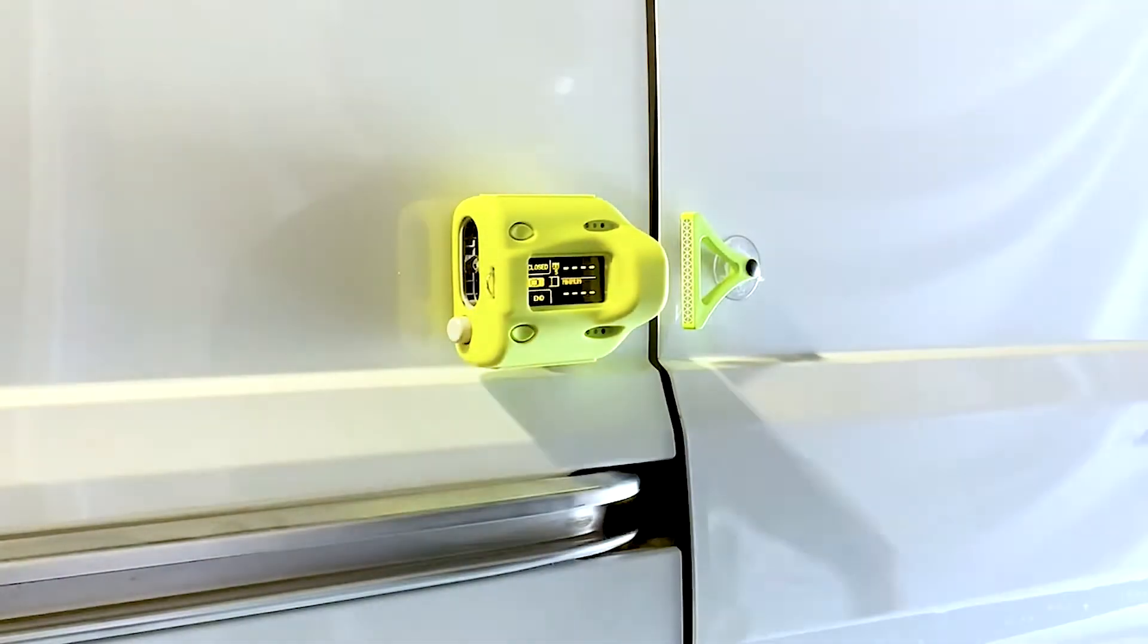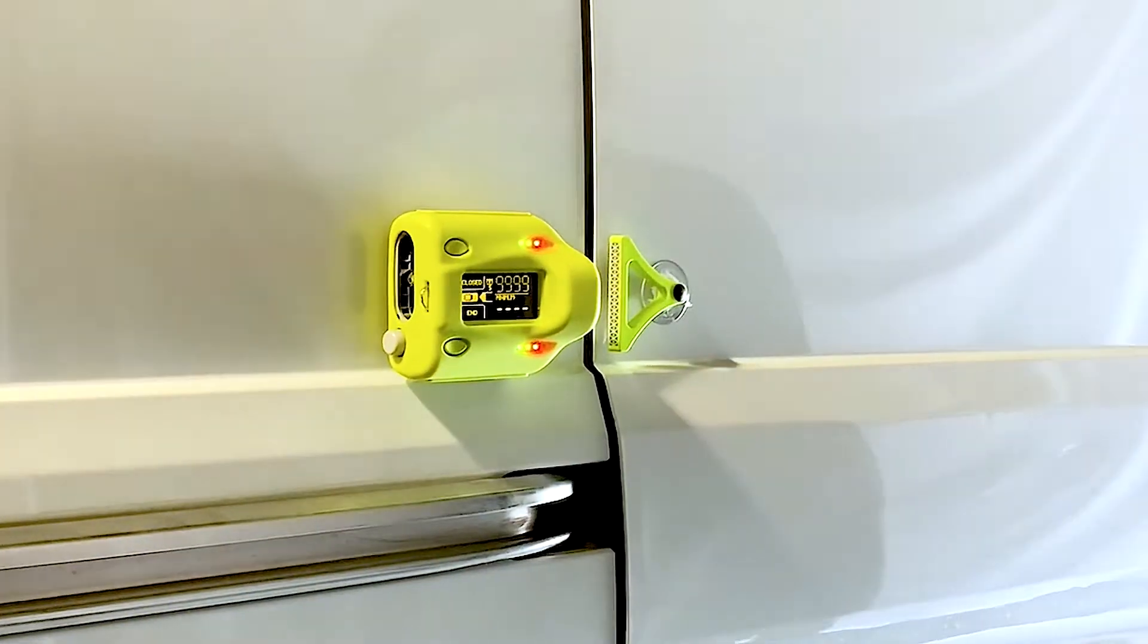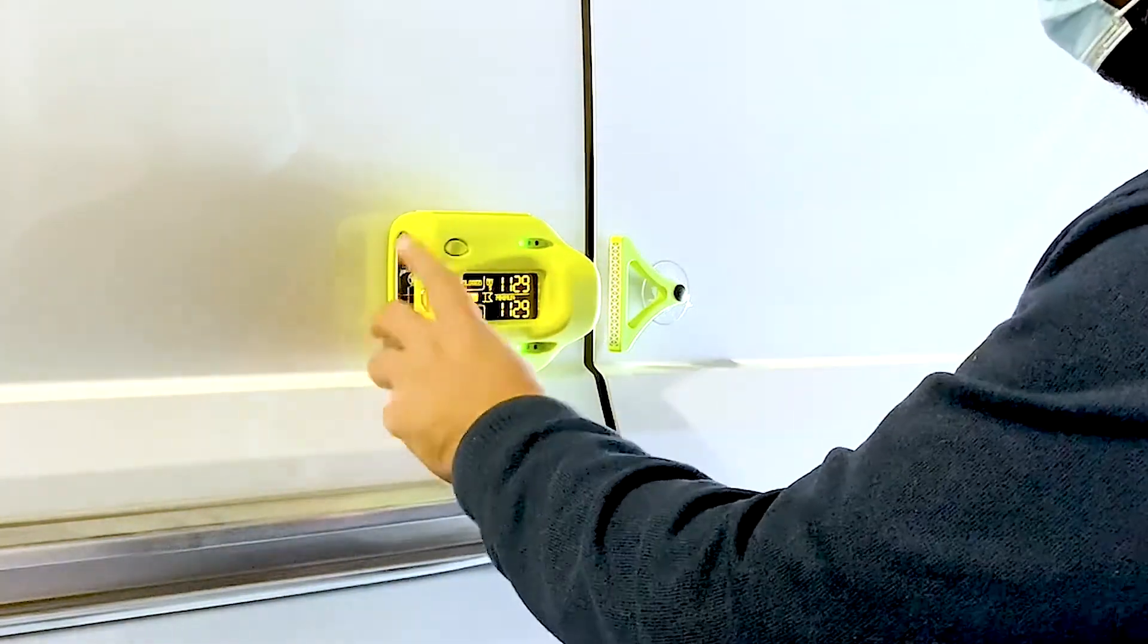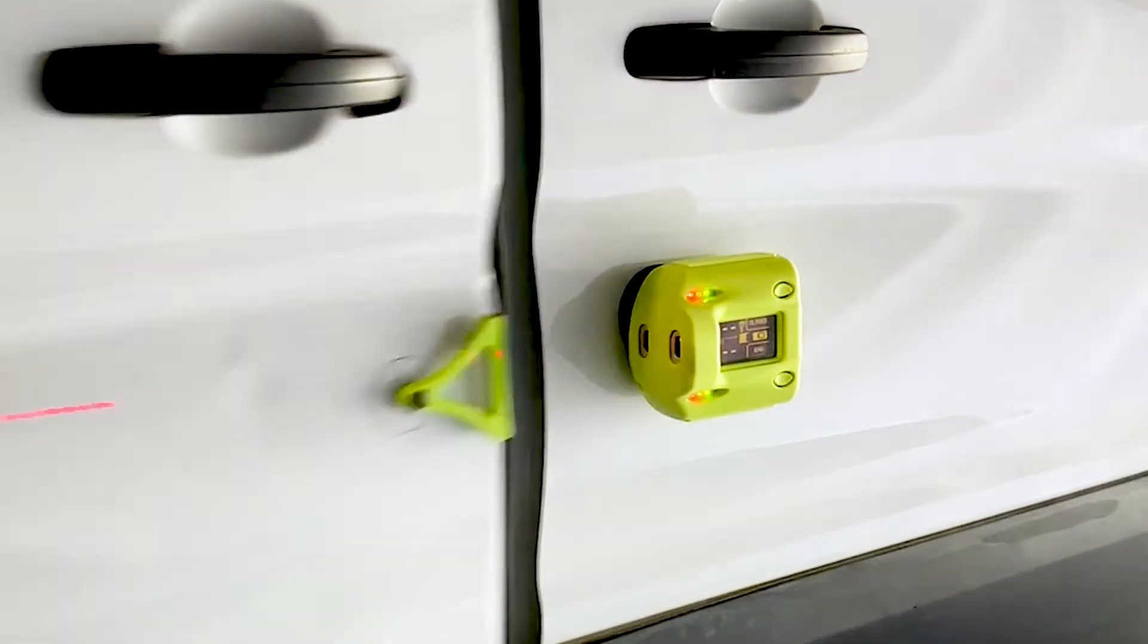Pressing the start button on the device begins a measurement session. The door is closed slowly first, followed by two or three faster slams until it fully latches. Green, yellow, and red lights on the device will show a pass, warning, or fail status in real time based on the measured speed compared to set tolerances.